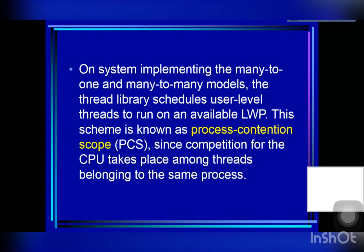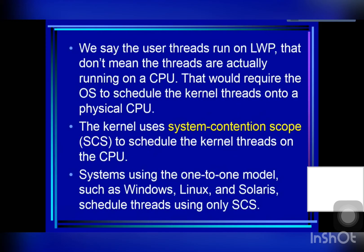Competition for the CPU with system contention scope scheduling takes place among all threads in the system. Systems using the one-to-one model, such as Windows, Linux, and Solaris, schedule threads using only system contention scope. Typically, process contention scope is done according to priority.